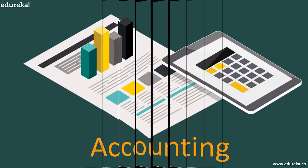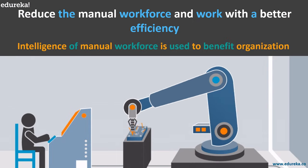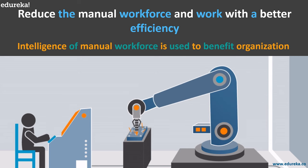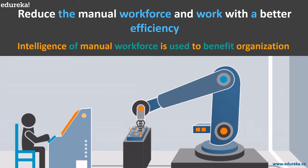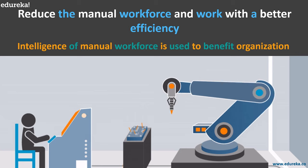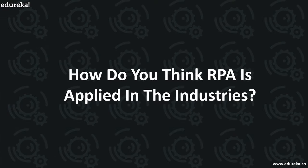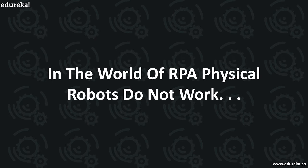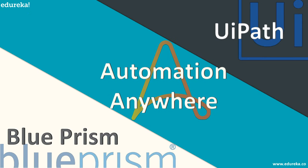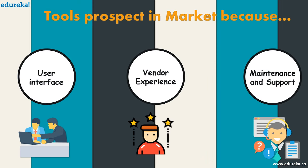Each industry can use RPA in their own way to reduce manual workforce and work with better efficiency, ensuring that the intelligence of the manual workforce is used in a better way to benefit the organization. RPA is applied in industries using an enormous amount of tools. The most popular tools are UiPath, Blue Prism, and Automation Anywhere. These tools prosper in the market because of their user interface, vendor experience, maintenance and support, and so on.